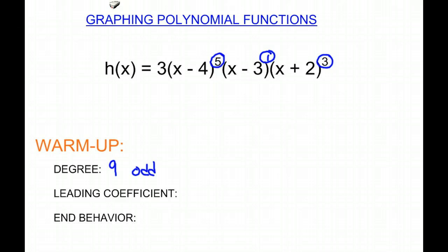Now our leading coefficient, we look at the number in front of all these terms, and we have a 3. And again, it is positive. And then we think of the end behavior of a positive odd function. And that will be decreasing on the left and then increasing on the right.